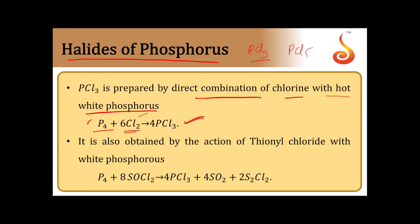PCl3 can also be obtained by the action of thionyl chloride on white phosphorus. Thionyl chloride is SOCl2. So the action of SOCl2 on white phosphorus also gives us the PCl3 molecule. These are the two preparations of PCl3: one from the elements themselves, and one by the action of SOCl2 on the P4 molecule.